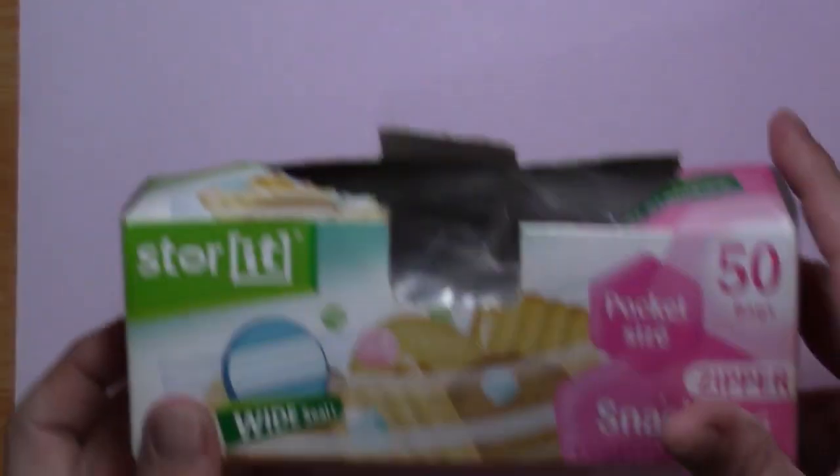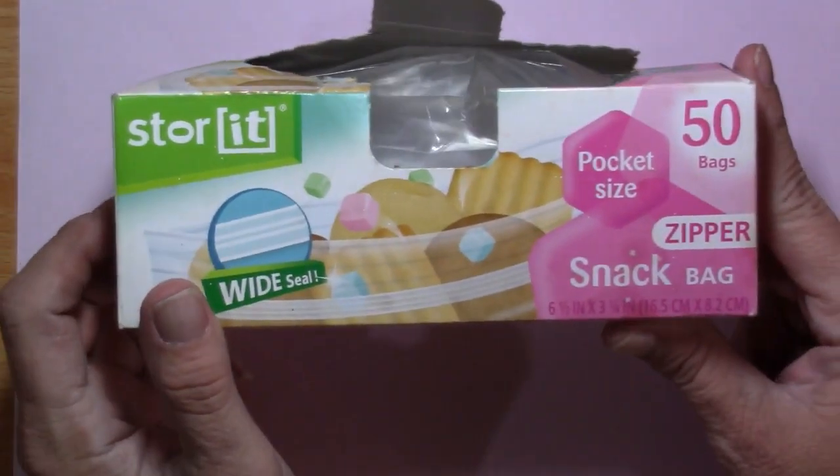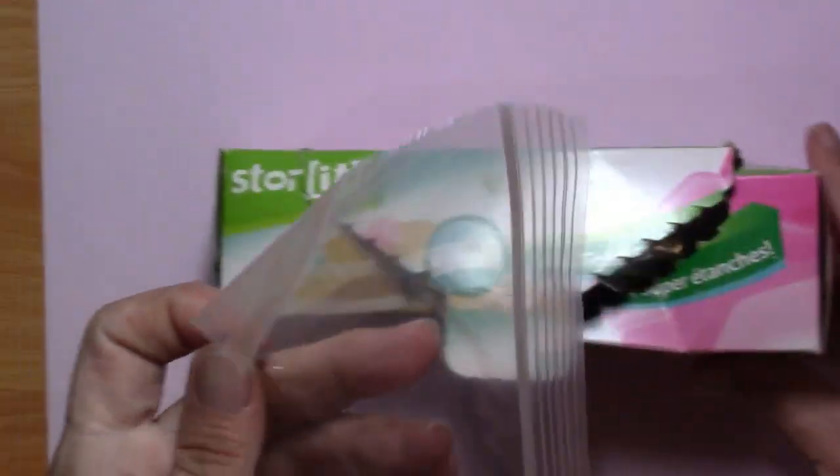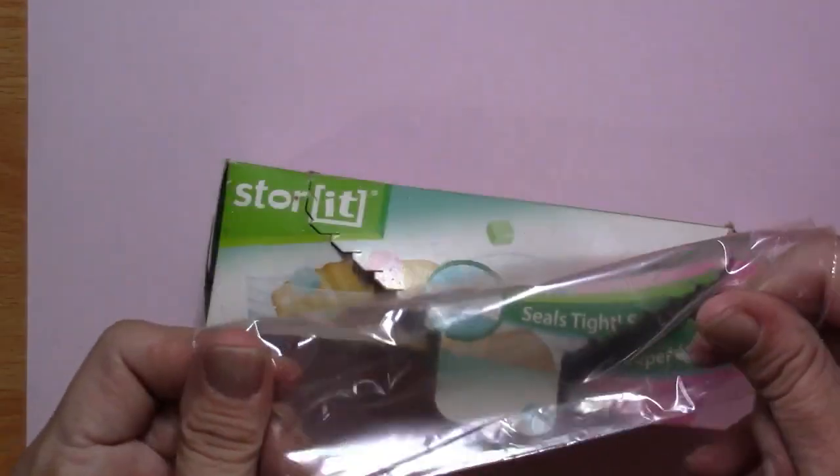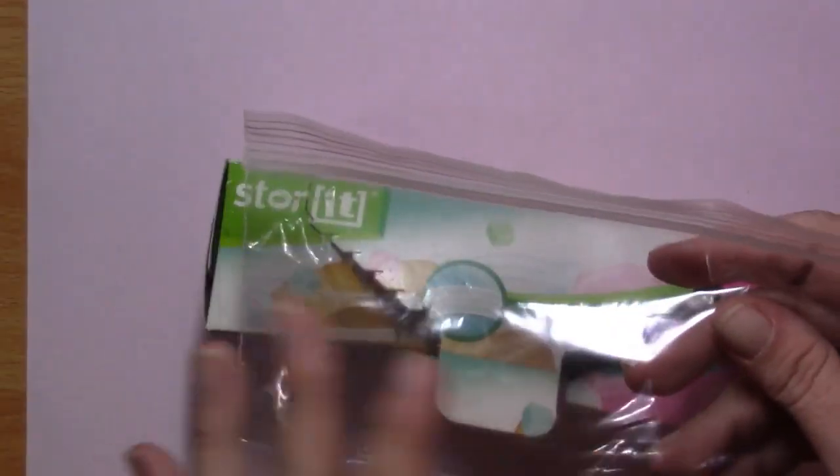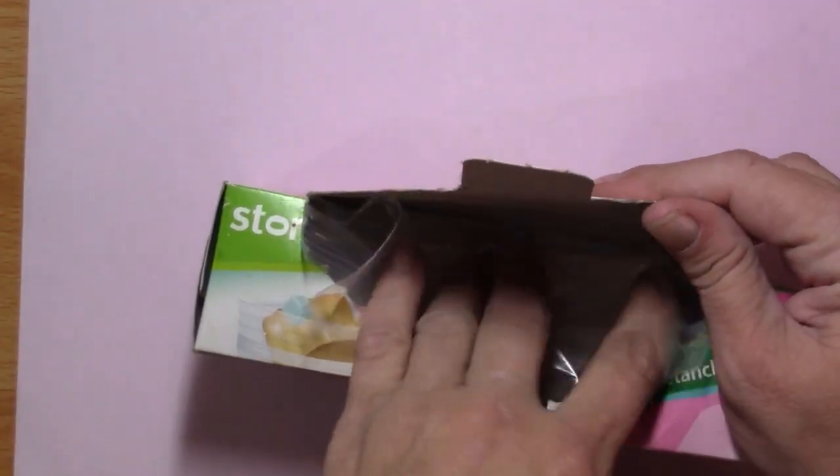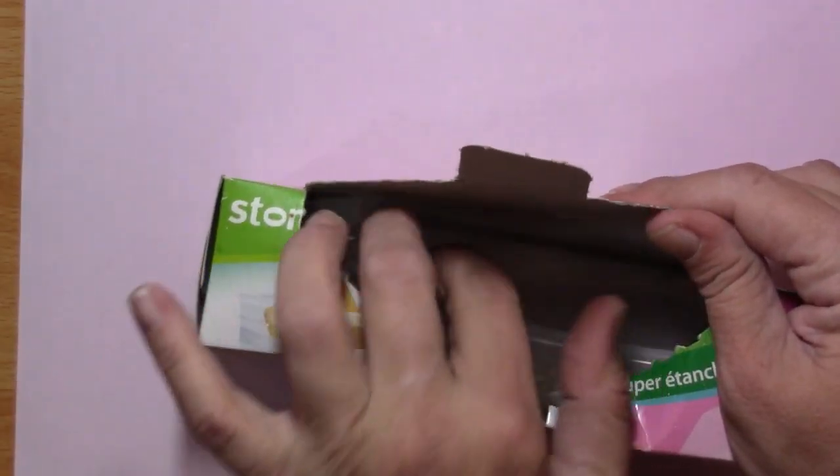The first thing I did when I first started diamond painting, I actually just used these snack bags. They keep everything sealed up and contained, and then I wrote the number on the outside of the bag. So I just kept them separate that way.